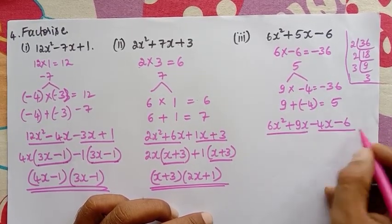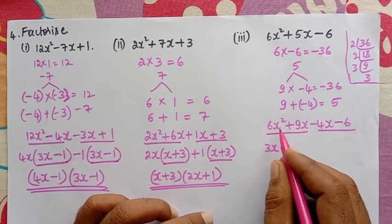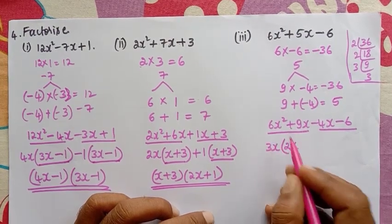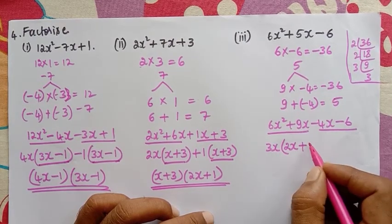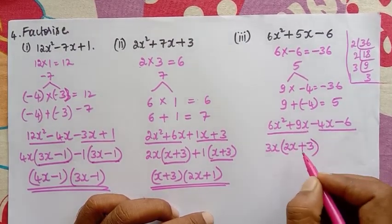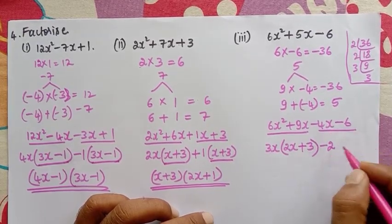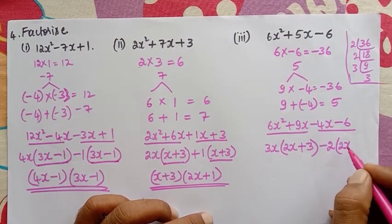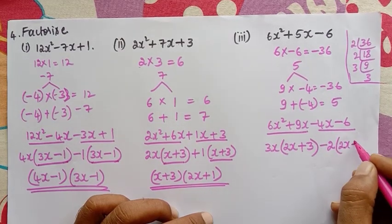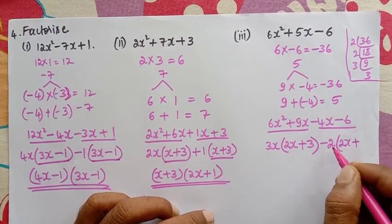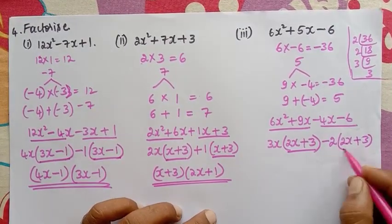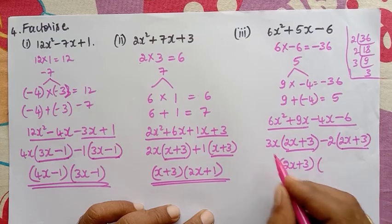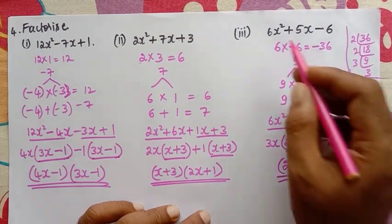We join the first two and the last two terms. Taking 3x as common from the first two: 3x into 2x is 6x square and 3x into 3 is 9x. Taking minus 2 as common from the last two: minus 2 into 2x is minus 4x and minus 2 into 3 is minus 6. We note that 2x plus 3 appears in both groups. So 2x plus 3 and 3x minus 2 are the factors of 6x square plus 5x minus 6.